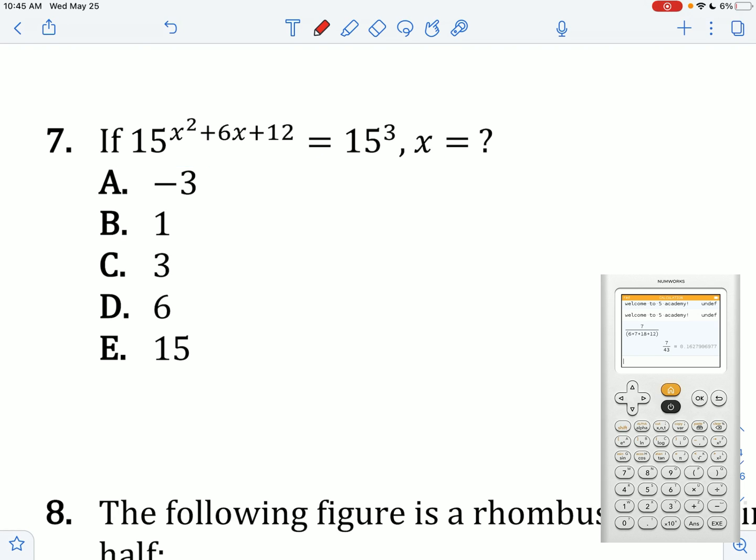If this is true, then what is x? You can just make the exponents equal to one another because they have the same base of 15. Subtract 12, subtract 3 on both sides. x squared plus 6x plus 9 equals 0. (x + 3)² equals 0. x equals negative 3.